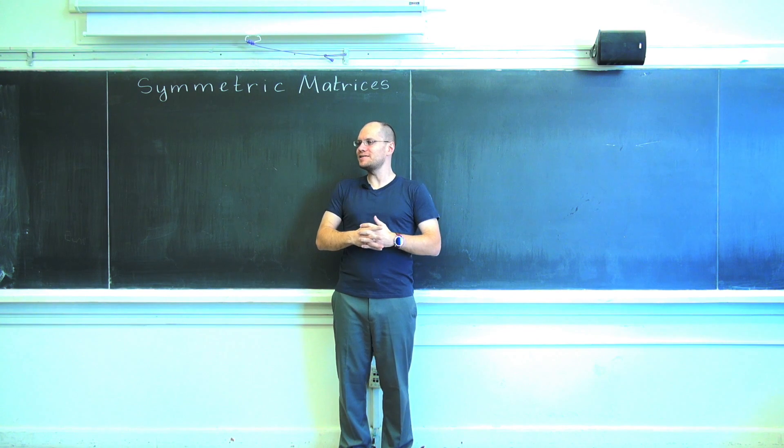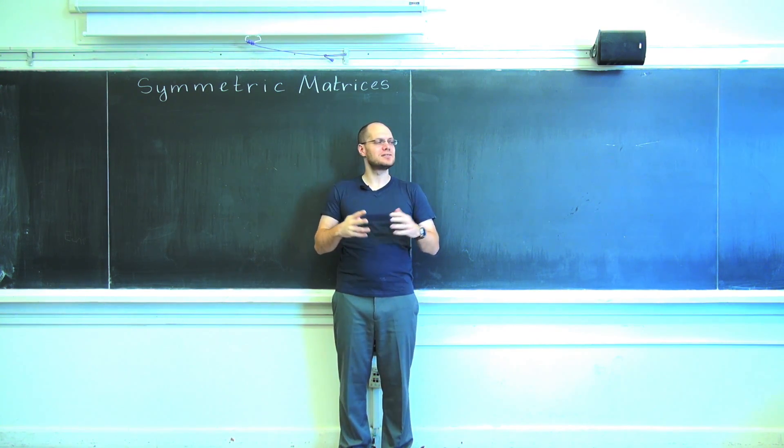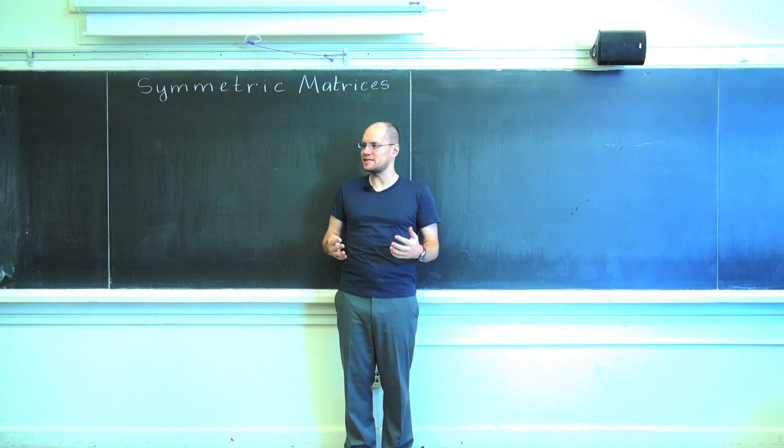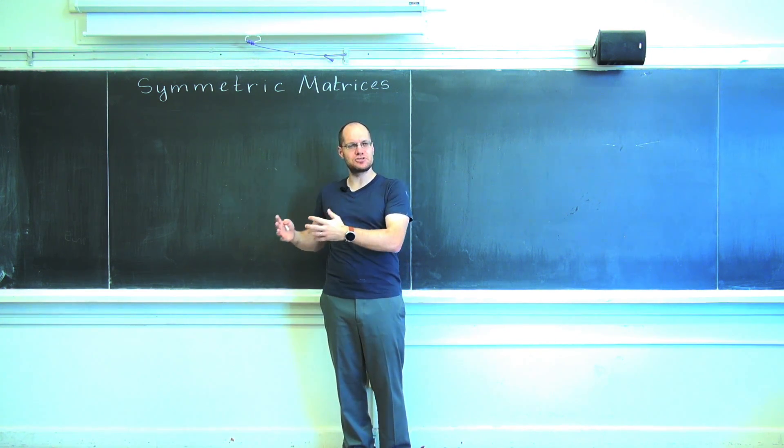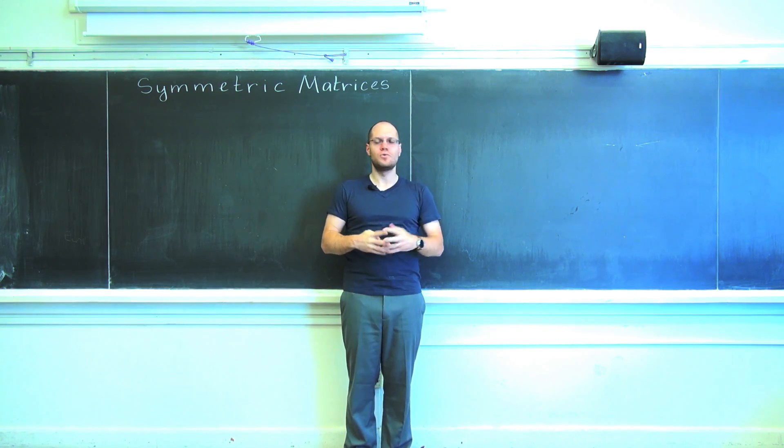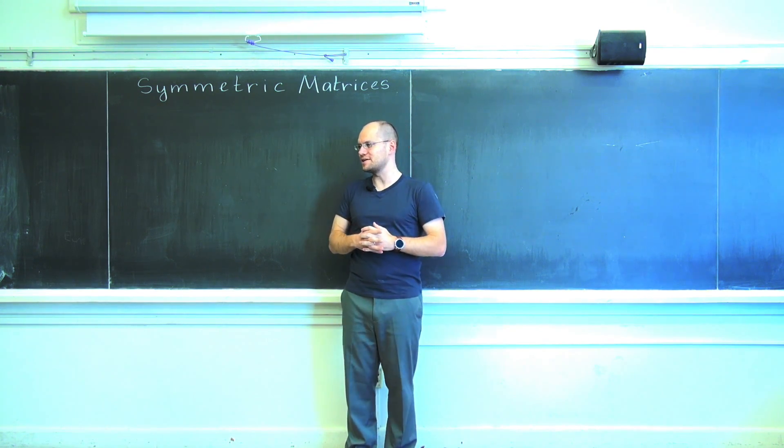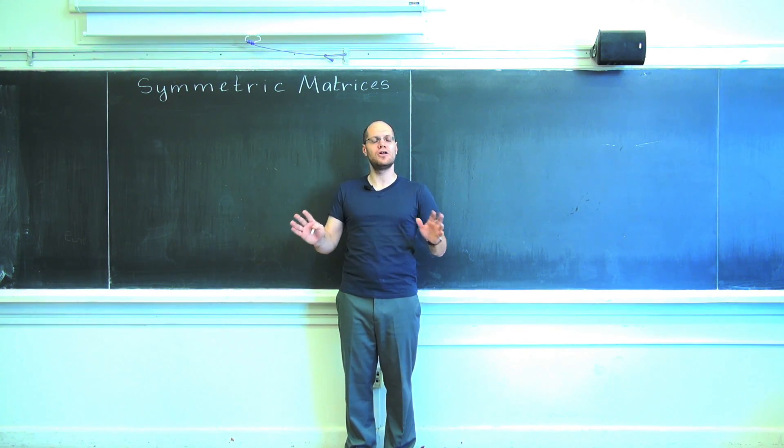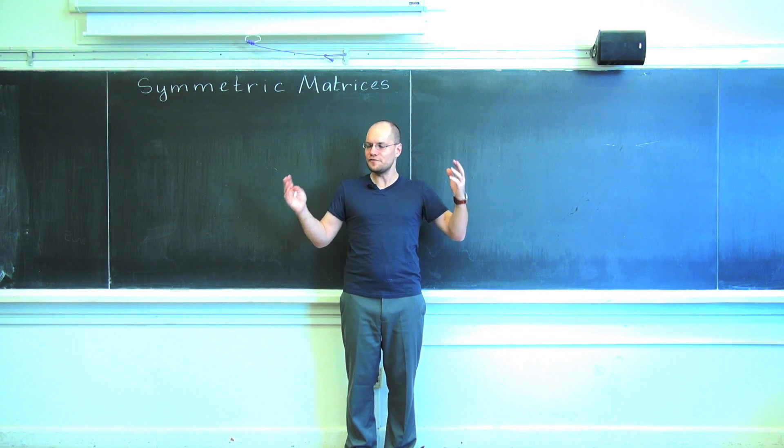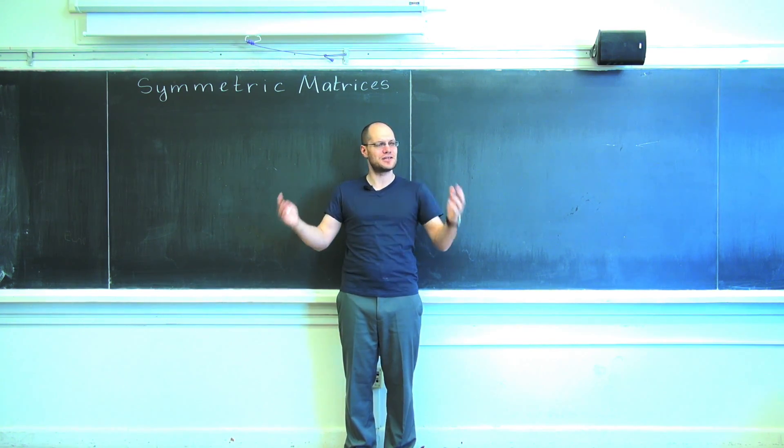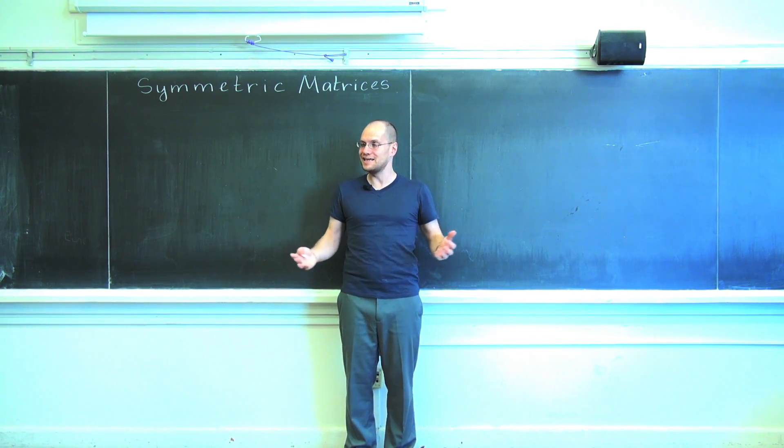And n linearly independent eigenvectors. In other words, the defective case is not possible. The geometric multiplicity of the eigenvalue will always match the algebraic multiplicity of the eigenvalue. So all of those quote-unquote problems, of course I don't want to call them problems and of course I don't want to call it going wrong because it is what it is.